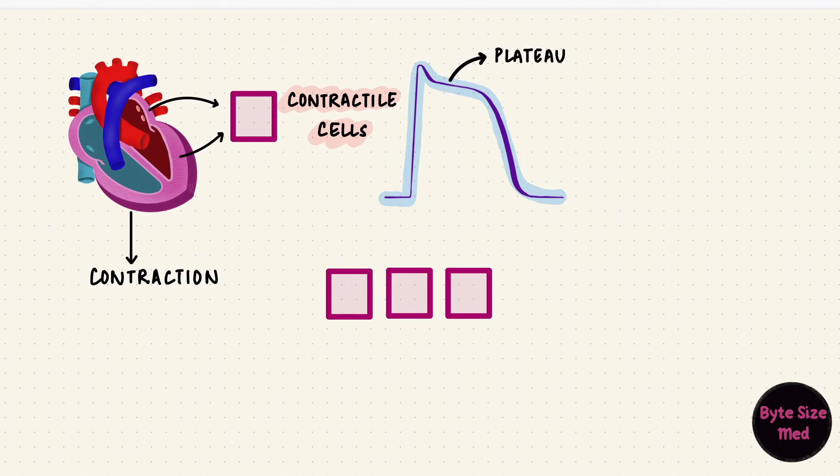These action potentials spread between the cells through gap junctions, ensuring that all the cells of the atria contract together and all the cells of the ventricles contract together.